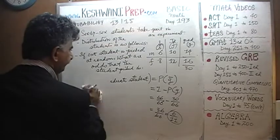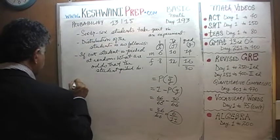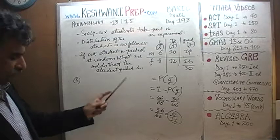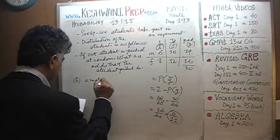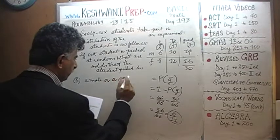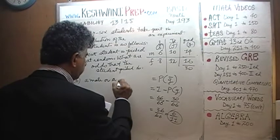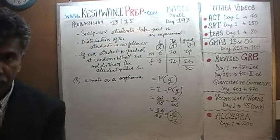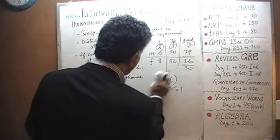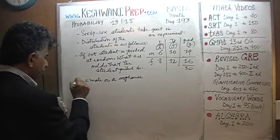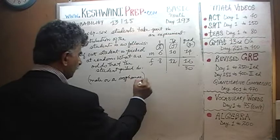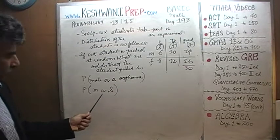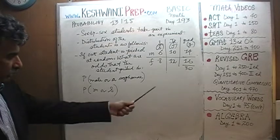That's the first answer. Now the second question: if one student is picked at random, what are the odds that the student is either a male or a sophomore? This is where you're going to have to pay a little attention. I'm going to first show you the situation in a Venn diagram so you can understand what's going on.